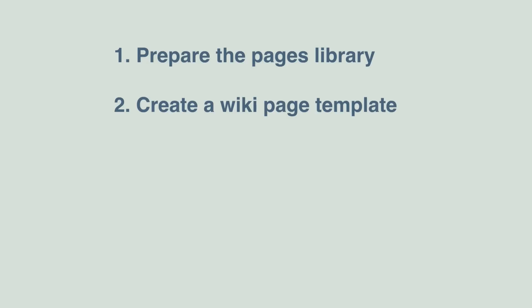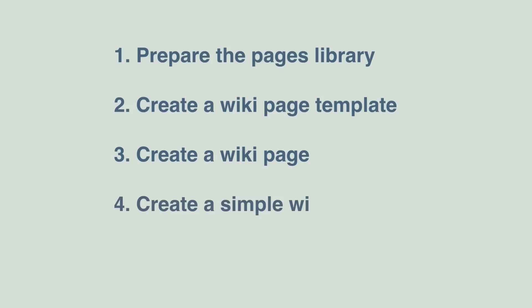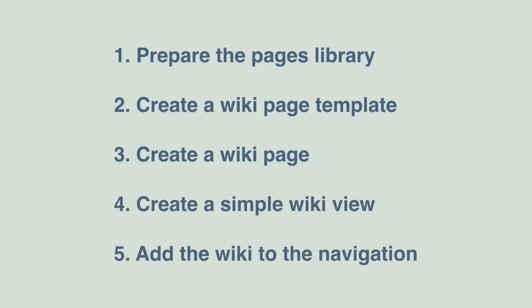I'm going to explain how to do this in five steps. First we're going to prepare the pages library, then create a wiki page template, then create a wiki page based on that template. We're going to create a simple wiki view on the pages library so we can see just the wiki pages, and finally we're going to add the wiki page to the navigation so it's easy to get to.